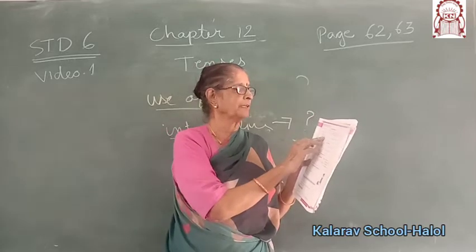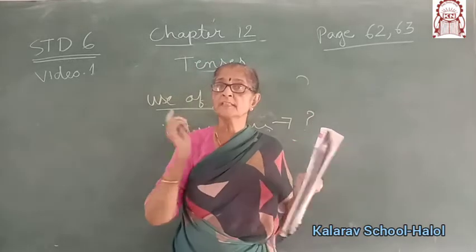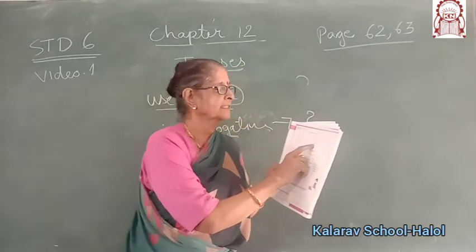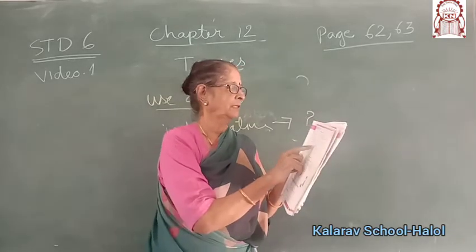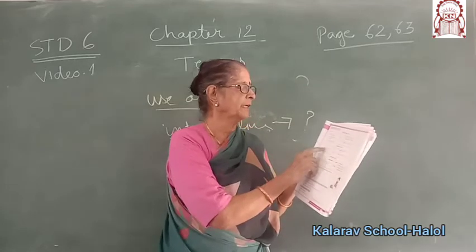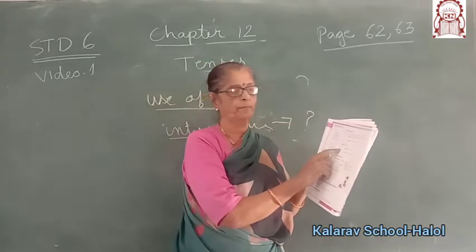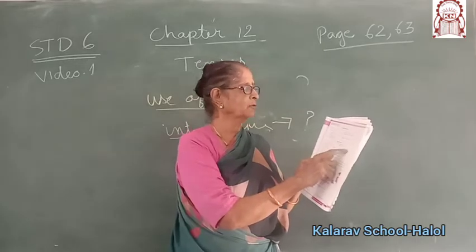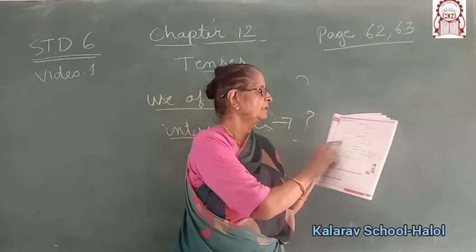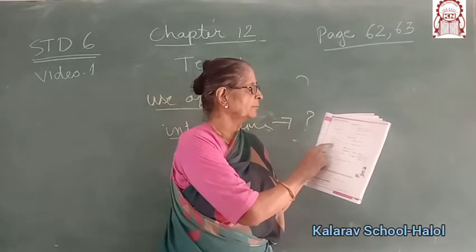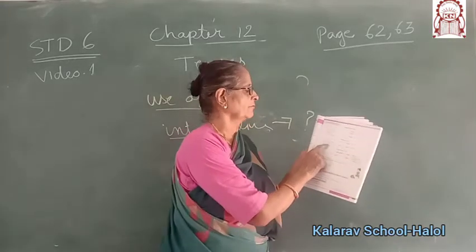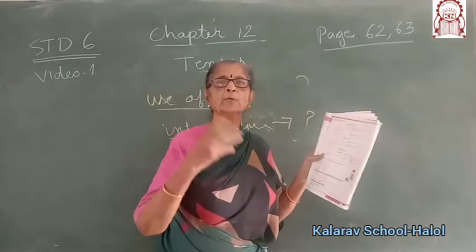With 'he,' 'she,' 'it,' and other singular subjects, we use 'is.' Example: 'He is talented.' Simple past tense: with 'I,' 'he,' 'she,' 'it,' and other singular subjects, we use 'was.' Example: 'I was late,' 'He was late,' 'She was late.' With 'we,' 'you,' 'they,' and other plural subjects, we use 'were.' Example: 'We were late,' 'You were late,' 'They were late.'